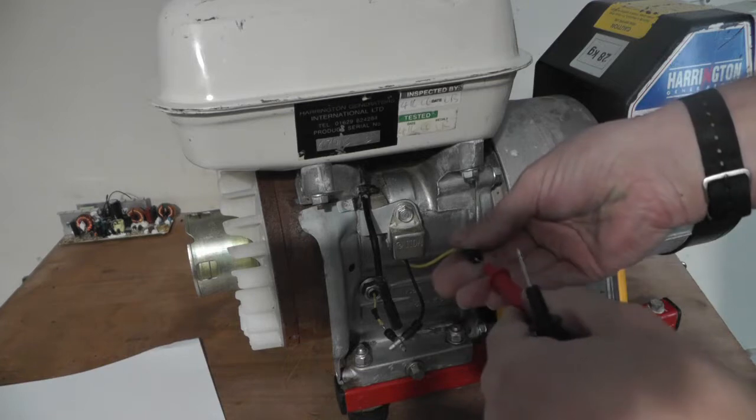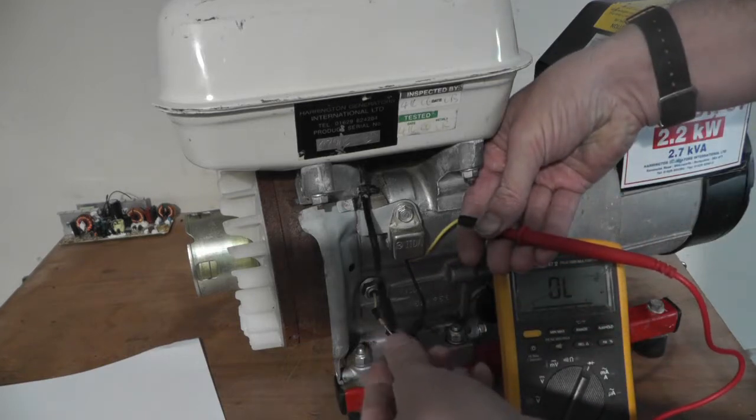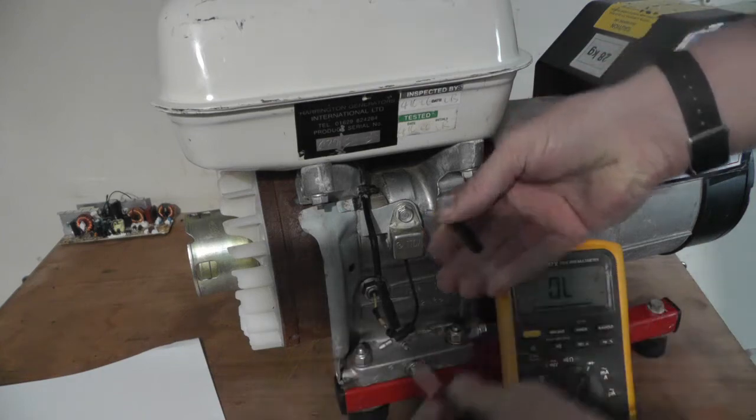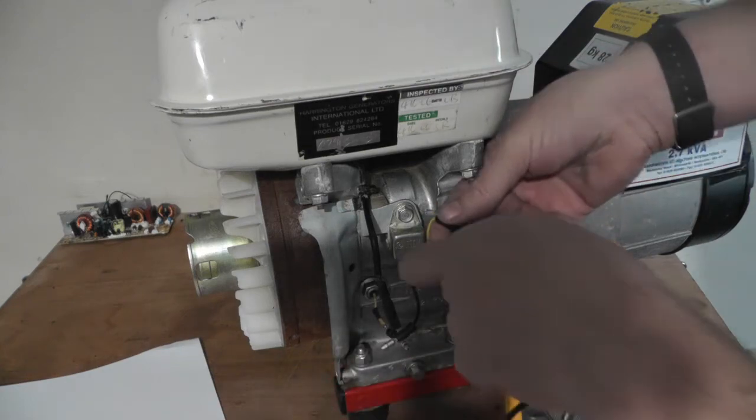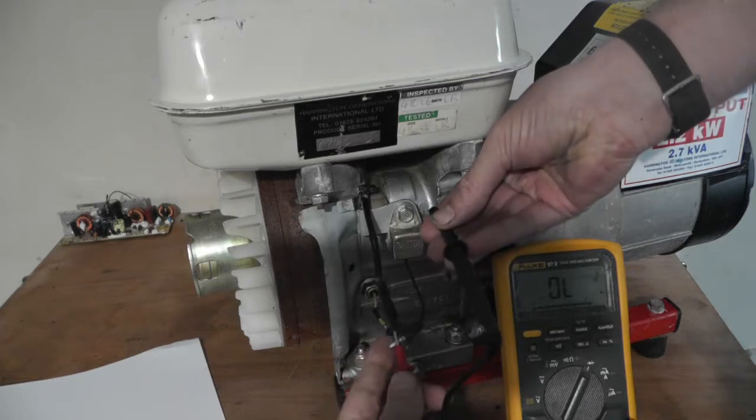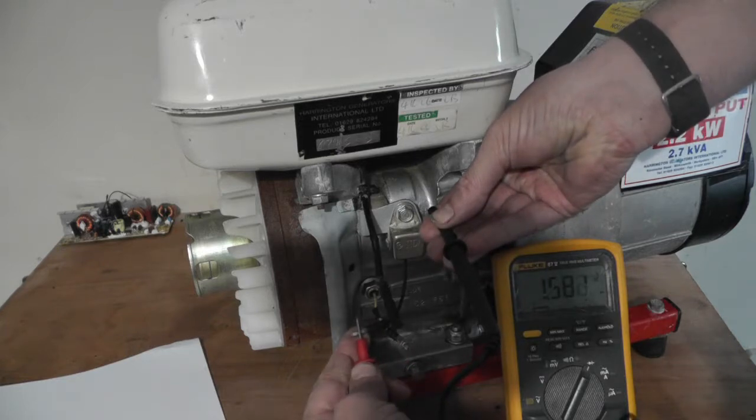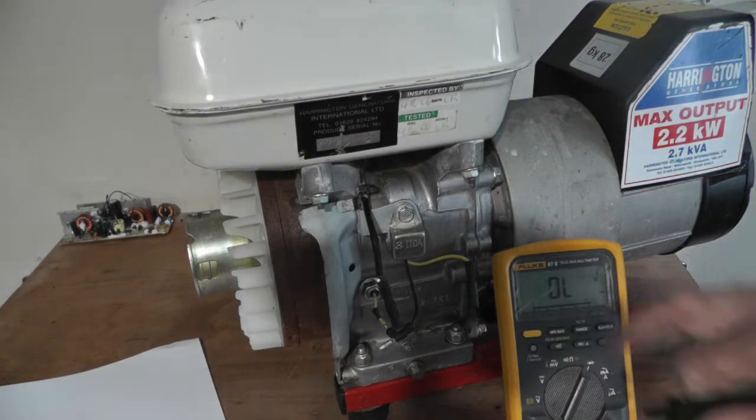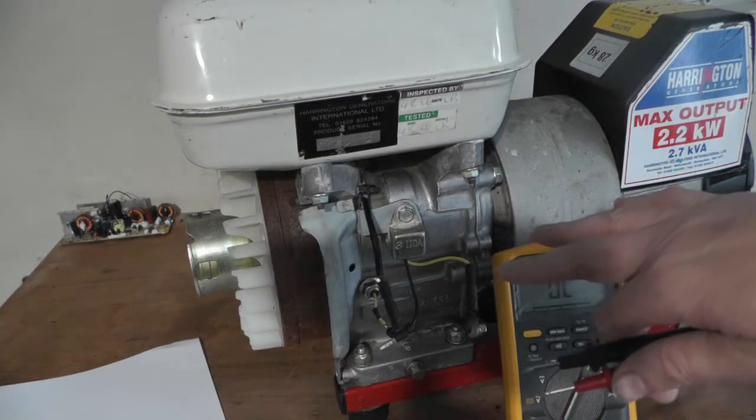You can test these both ways, just make sure the diodes are fine. So no reading one way in diode mode. Switch the leads over, and you get a reading voltage drop. That seems to be alright. At least I know that side of the system's working now.